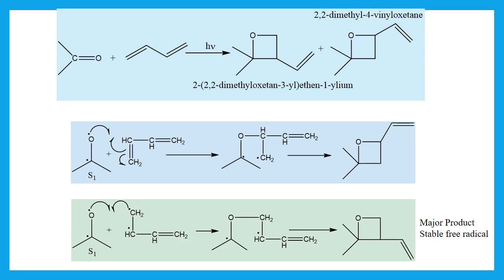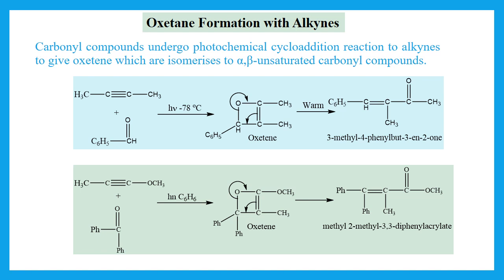Bond formation and cyclic oxetane ring closure take place only when bond rotation occurs between the two radical electrons. Next is oxetane formation with alkynes. Carbonyl compounds undergo photochemical cycloaddition reactions with alkynes to give oxetanes, which are usually not isolated but isomerize to α,β-unsaturated carbonyl compounds upon thermal reaction. The oxetane intermediate rearranges upon heating to produce the α,β-unsaturated carbonyl compound.